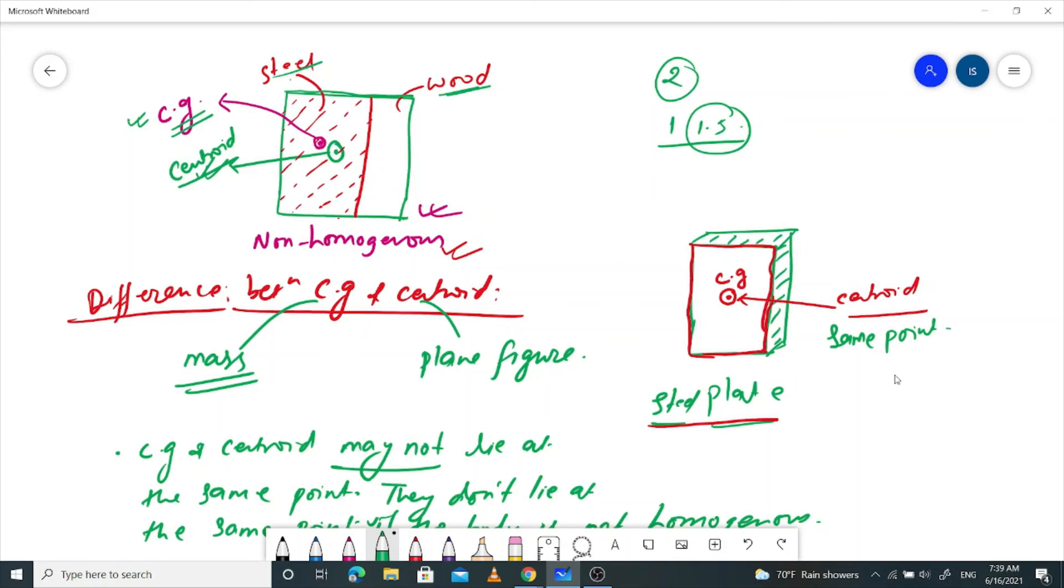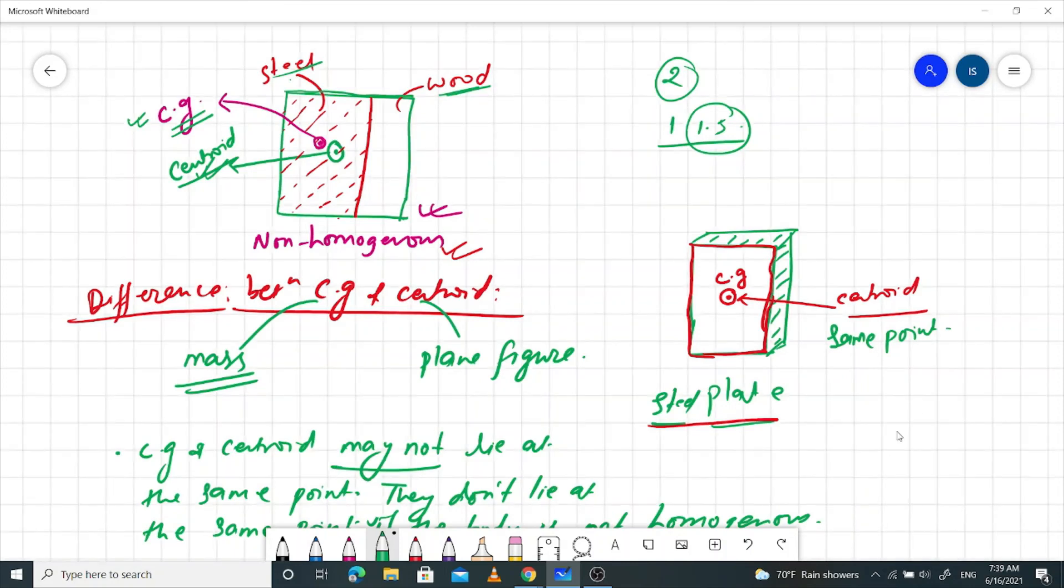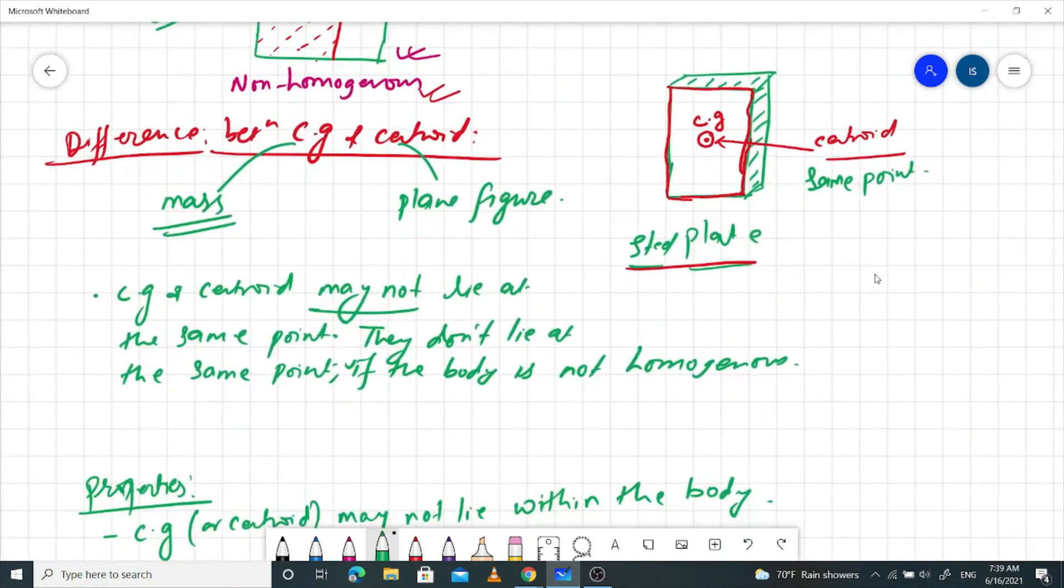So, the reason for that is, the CG is not in the same point. The CG is not in the same point. The CG and centroid are not in the same point.